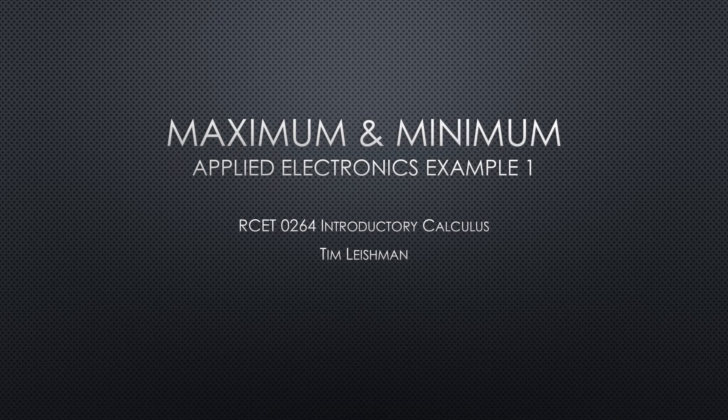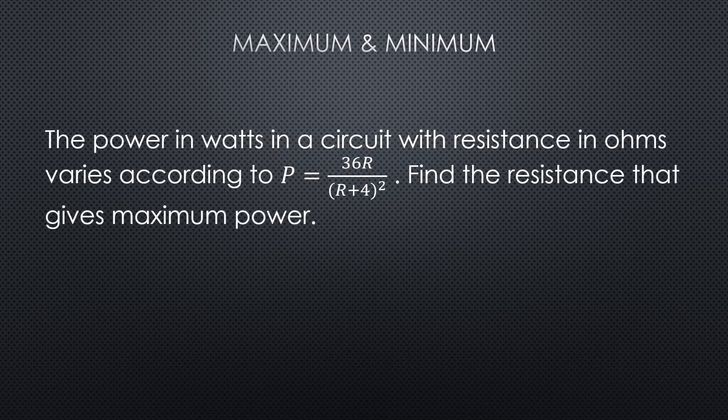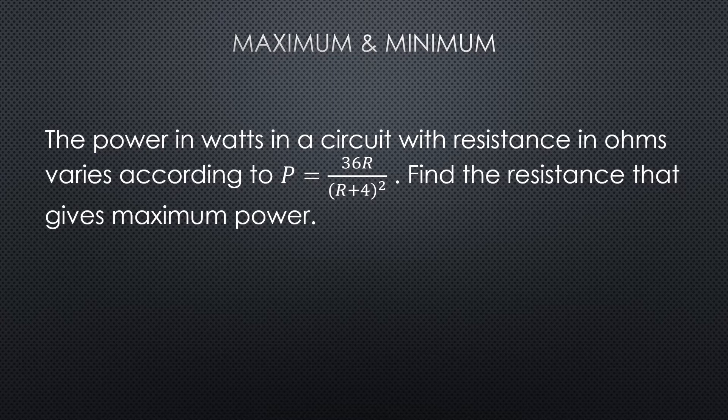Welcome to Max Mann's Applied Electronics example number one. Okay, so here's the question. The power in watts in a circuit with a resistance in ohms varies according to P equals 36R divided by the quantity R plus 4 squared. Find the resistance that gives maximum power.